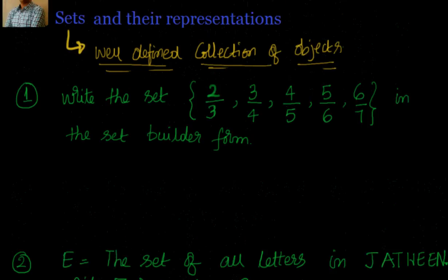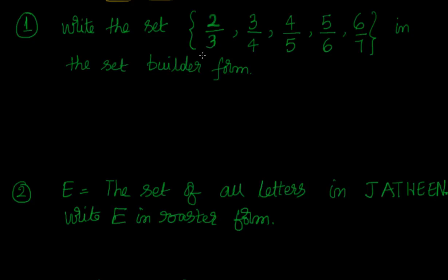We will go through some examples on sets to understand whatever the concept we have learnt. Write the set 2/3, 3/4, 4/5, 5/6, 6/7 in the set builder form. This is a set and it is given in roaster form where in the braces we have been given all the values. Now I have to understand what is the pattern followed here. Now if I take the values as n equal to 1, 2, 3, 4, and 5, and see what is the relationship I have. I see that in the first one I have 1 plus 1 by 1 plus 2. In the second I have 2 plus 1 by 2 plus 2. So I can see that it is nothing but equal to n plus 1 by n plus 2. That is the pattern which is followed. Let's check for 4. 4 plus 1 by 4 plus 2. So that is the pattern followed. And n should be between only 1 and 5.